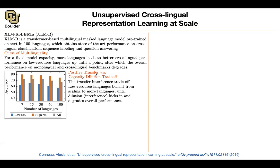There is this positive transfer, and there is a trade-off between positive transfer and capacity dilution — also called the transfer-interference trade-off. Low-resource languages benefit from scaling to more languages, until your model doesn't have the capacity to handle all of those languages at the same time. That is where this dilution or capacity interference kicks in.